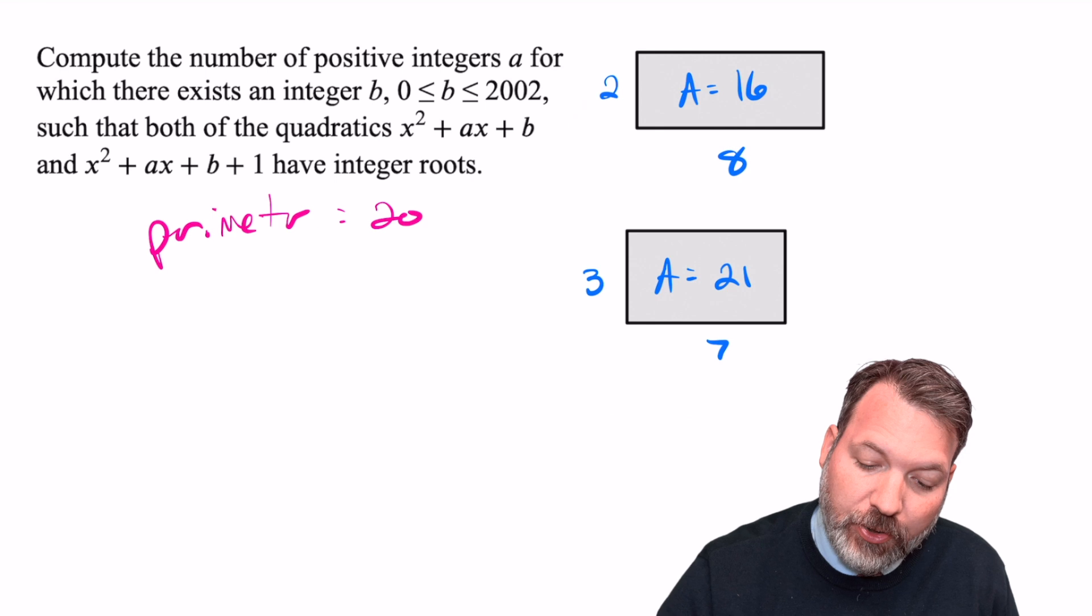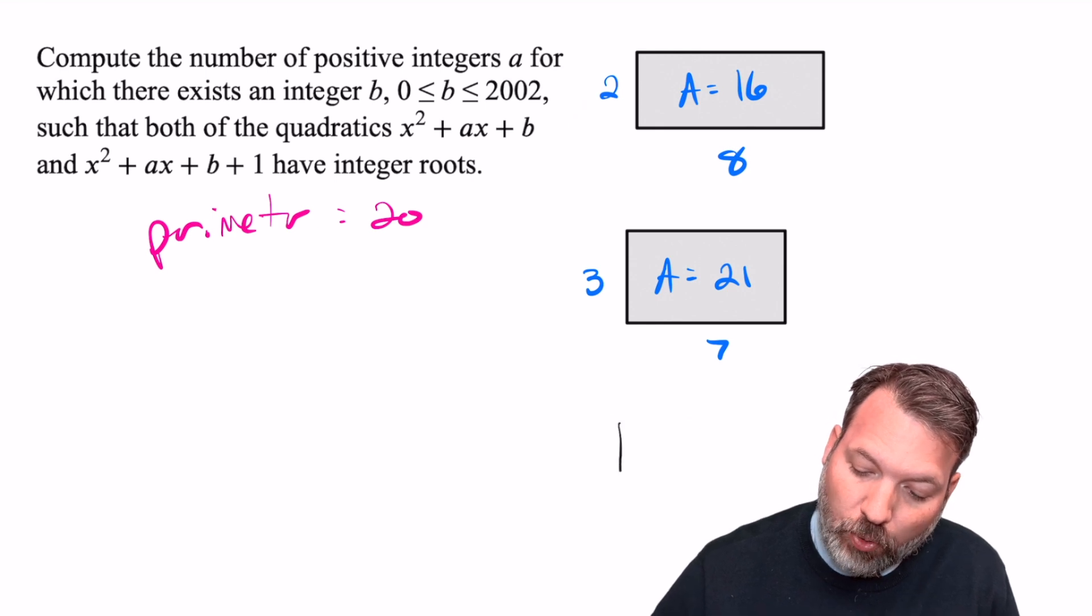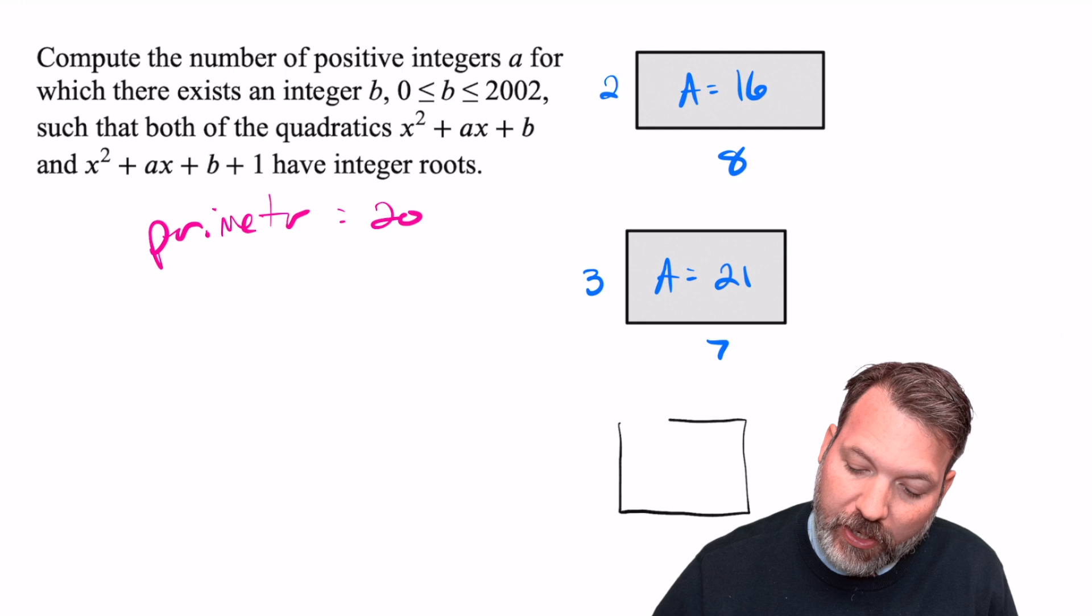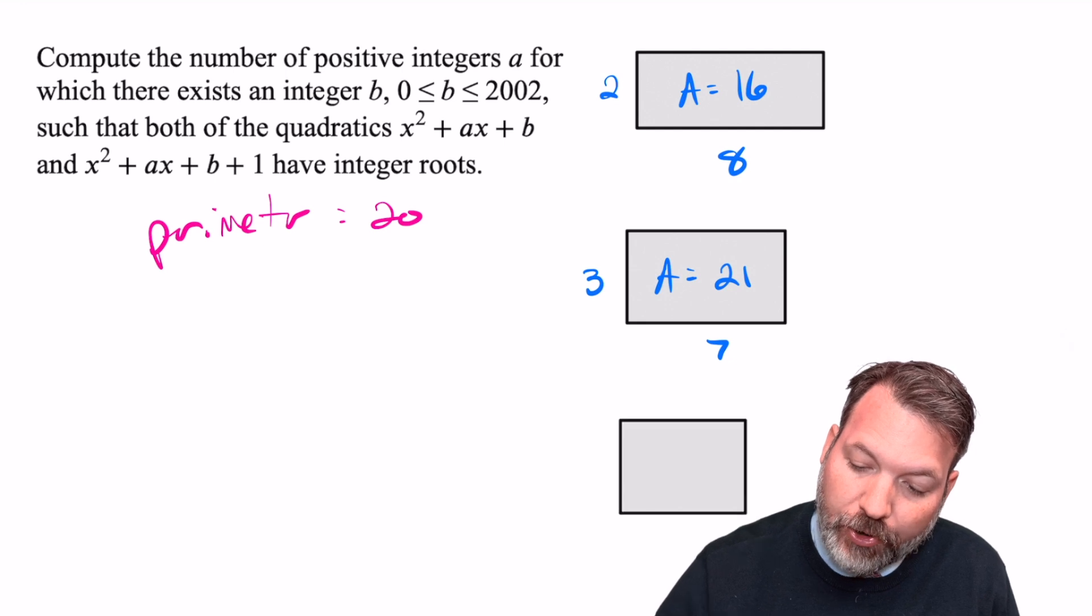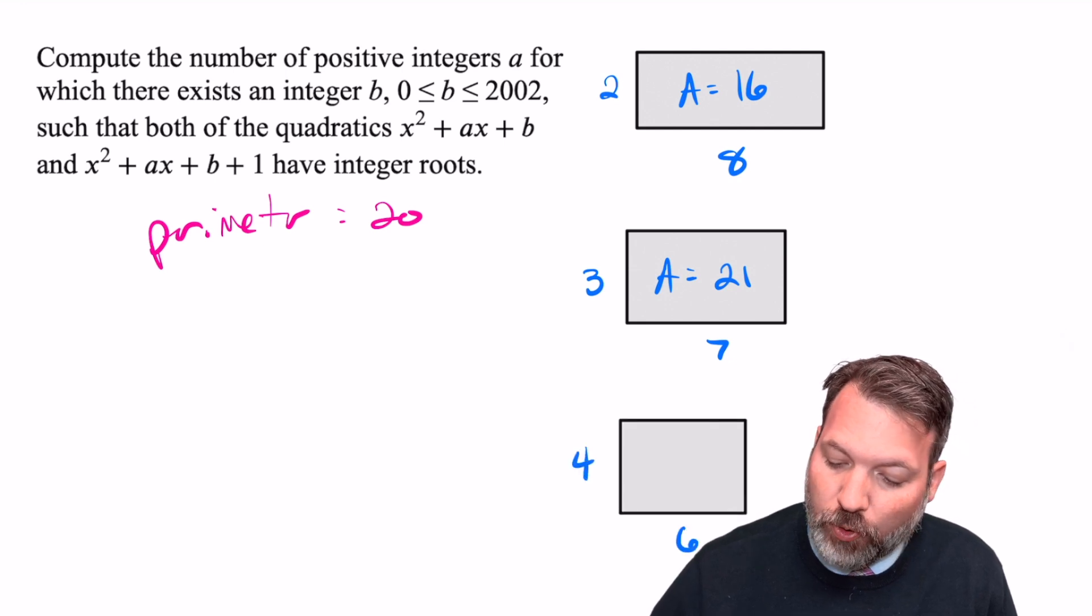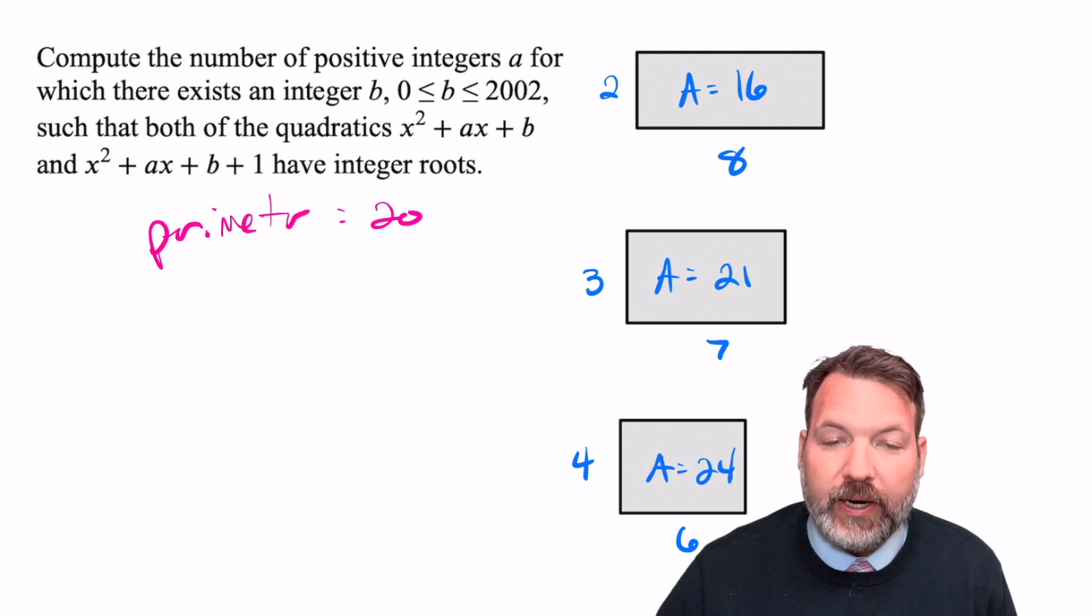In fact, as we keep doing this process, as we make the figure more and more square-like, we end up finding that we get more and more area. So for example, if we make it into a four by six rectangle, we get an area of 24.